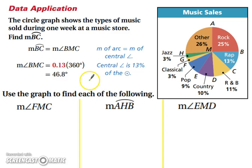So we want 13% of that 360 degrees and that's how many degrees the measure of arc BC is. Well, if you're dealing with percents, move the decimal two places. So 0.13 times 360 will give you 46.8 degrees. So the measure of angle BMC and the measure of arc BC is 46.8 degrees.